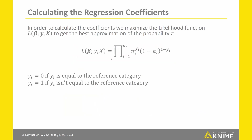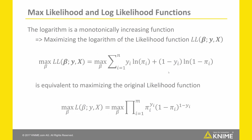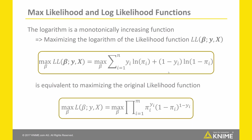In order to calculate the regression coefficients, we maximize the likelihood function. This is defined as the product over all samples, where in each factor we multiply the probability of the class being equal to 1 to the power of the value of Y in the sample, by the probability of the class being equal to 0 to the power of 1 minus the value of Y, where Y is always either 0 or 1. The goal is to find the regression coefficients that maximize this likelihood function. As the logarithm is a monotonically increasing function, maximizing the logarithm of the likelihood function is equivalent to maximizing the original likelihood function.